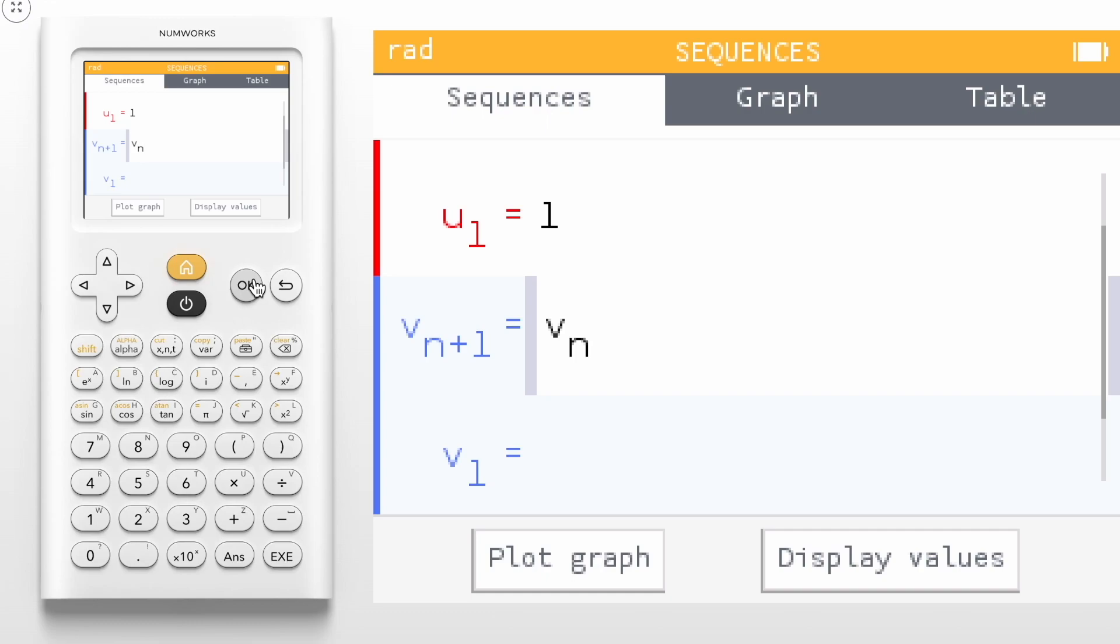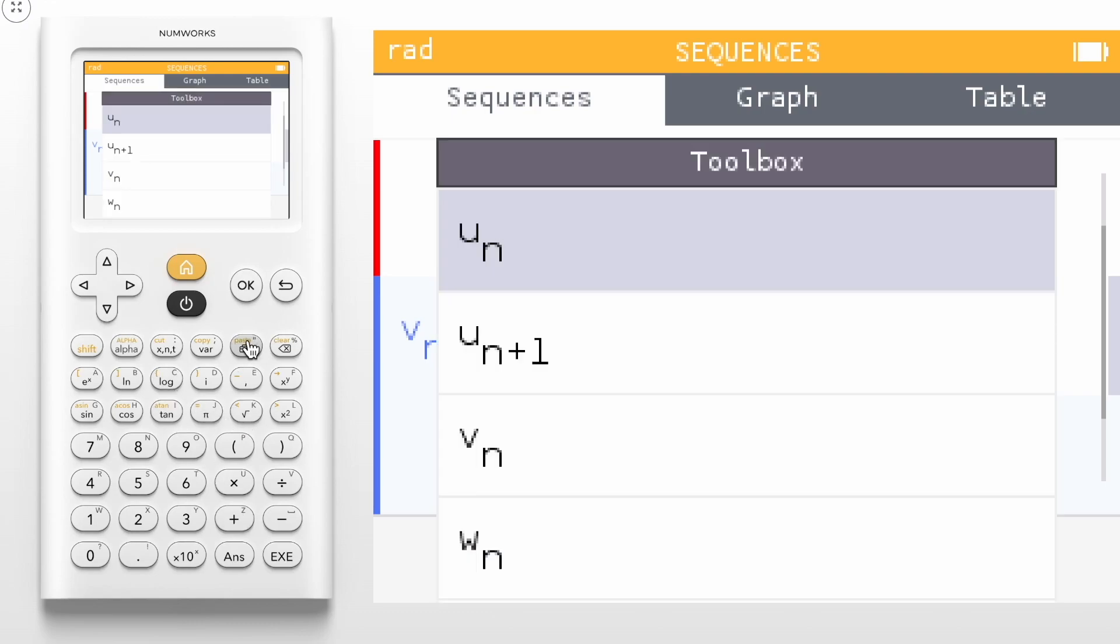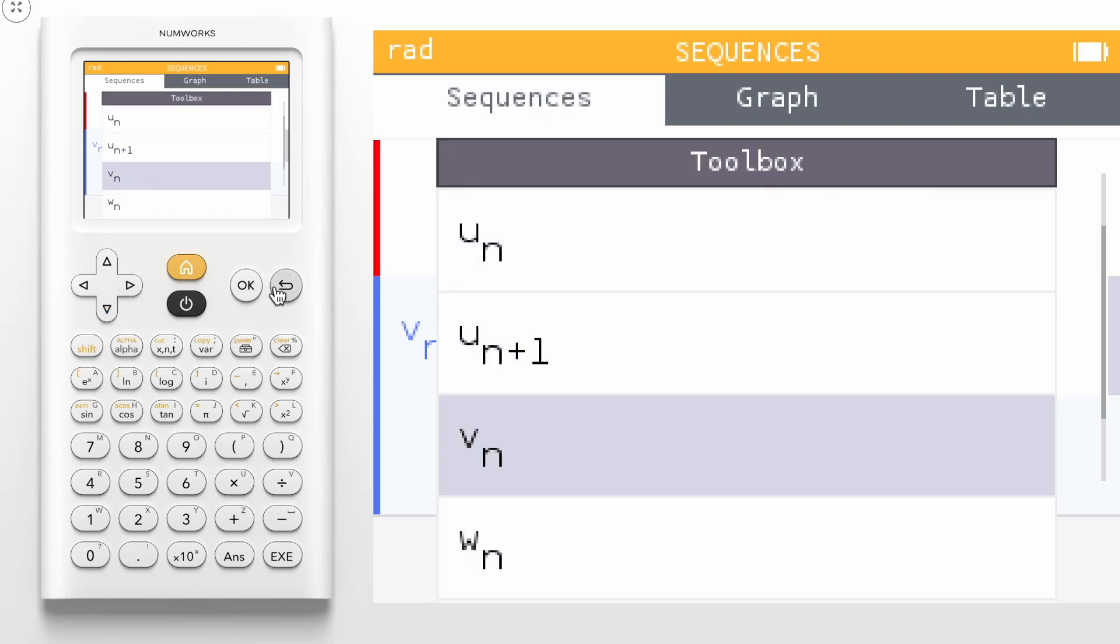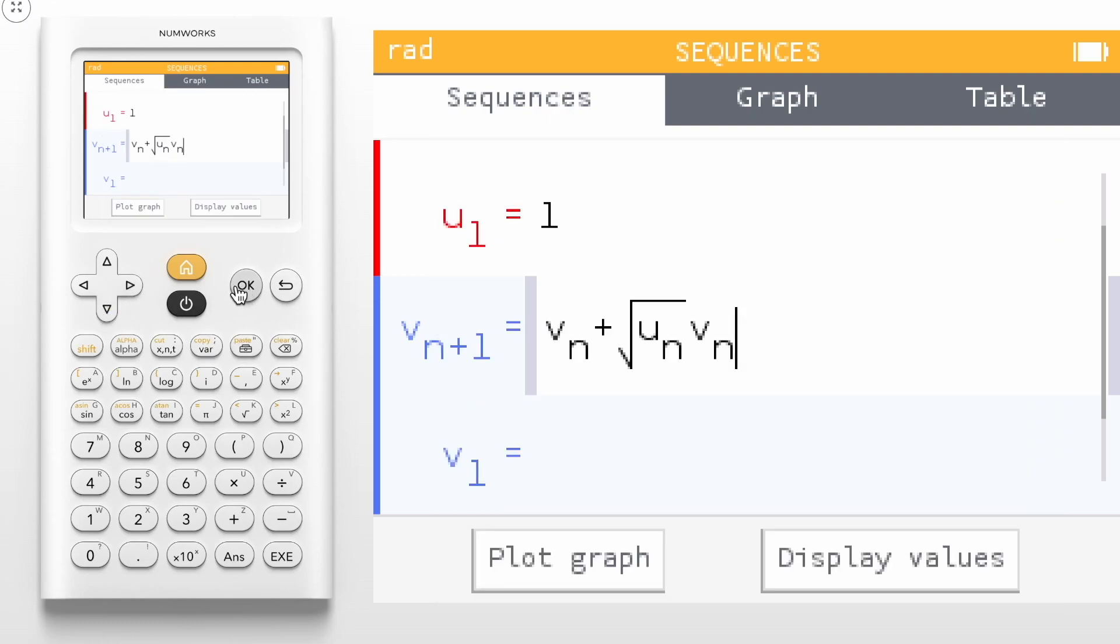So we'll have v sub n, the previous y values, plus the slope, which is the square root of the x values. Using our toolbox we can grab our u sub n times our y values—again, our full slope here—times our change in x values, or our step size.